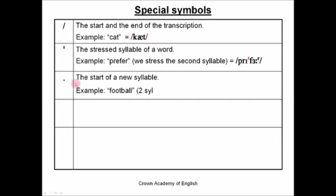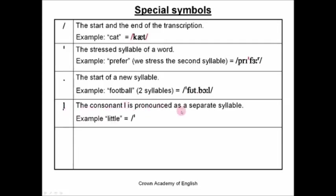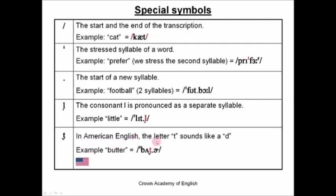This dot symbol shows the start of a new syllable. For example, the word football has two syllables: foot and ball. In IPA, we show the start of the new syllable with the dot. This symbol shows that the consonant L is pronounced as a separate syllable. For example, in the word little, the L sound is in fact a new syllable, so we use this symbol. And this symbol is only used in American English.